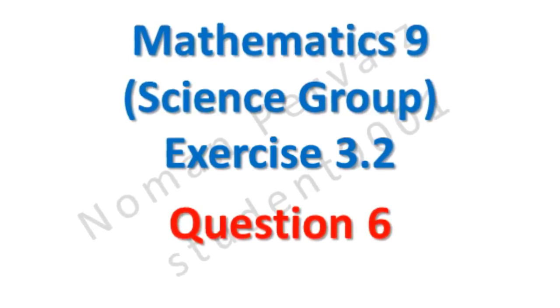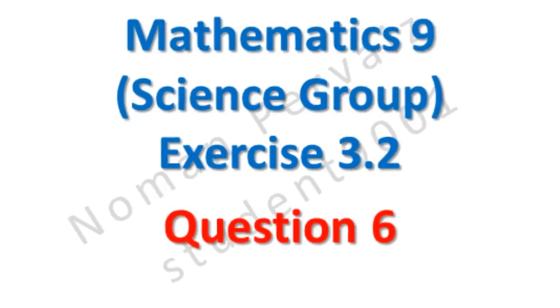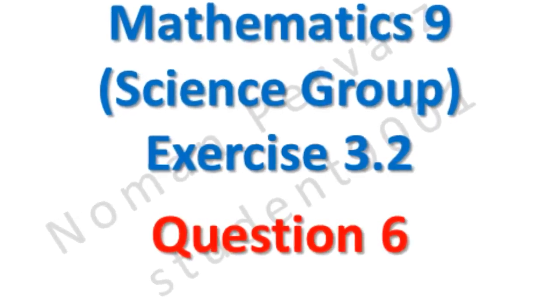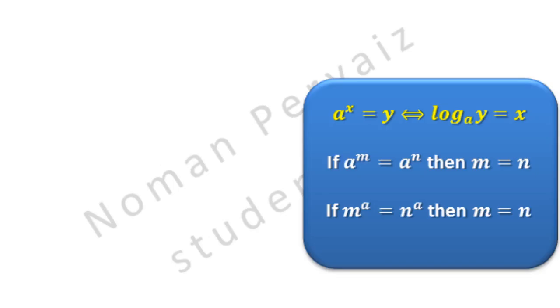We are going to start part 1 of question number 6, of 9th class math, science group, exercise 3.2. Before starting our questions, we are going to tell you some properties that will be discussed during the solution. First property is: if you have A raised to the power x equal to y, then it will be converted to log base A of y equal to x. This is the property of logarithm.